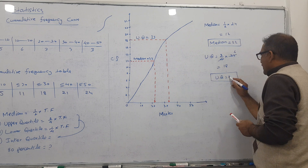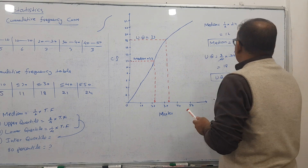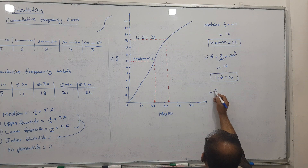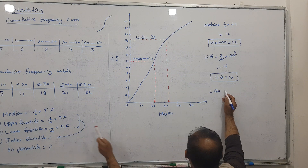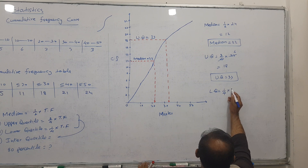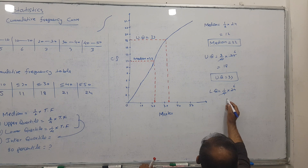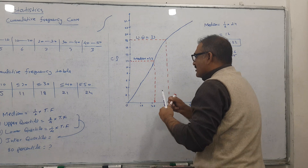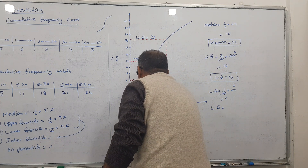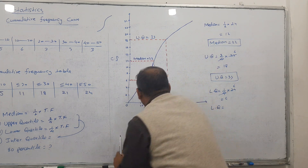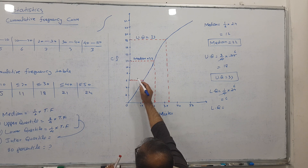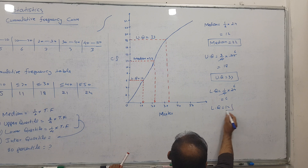For the lower quartile: the formula is ¼ × total cumulative frequency = ¼ × 24 = 6. But 6 is the pointer, not the answer. From 6 on the y-axis, go across to the curve and come down. The answer is approximately 12. So the lower quartile is 12.